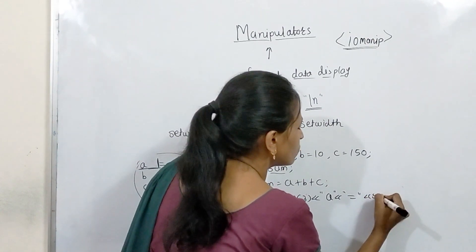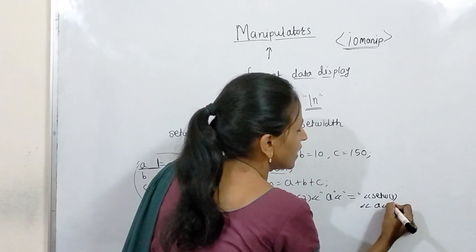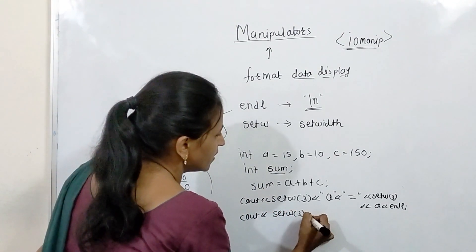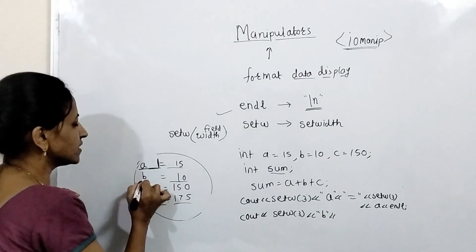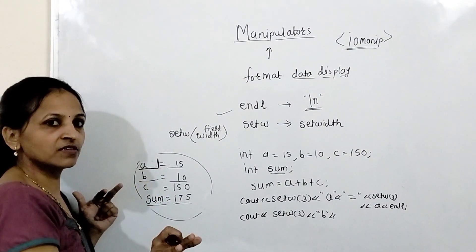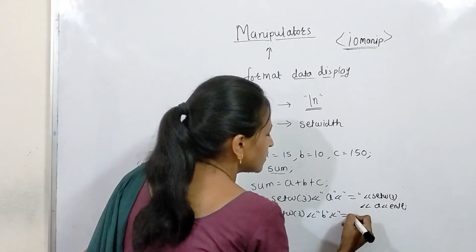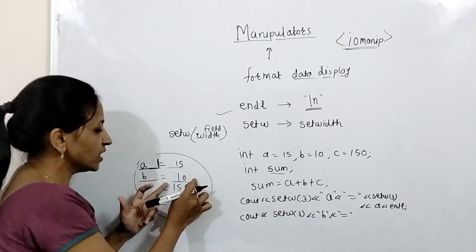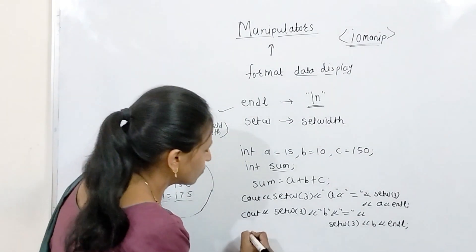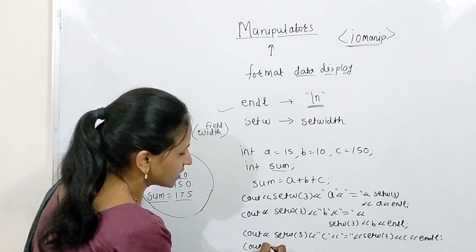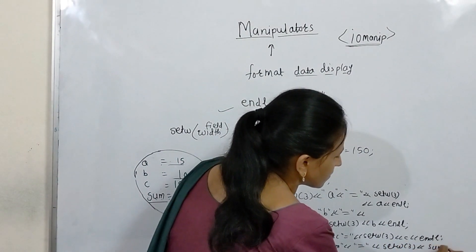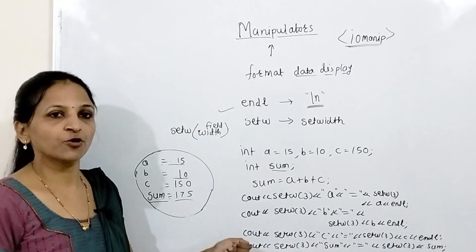After that, we display the next line: again set width to 3 for displaying b as a string — b will be displayed in those three places, but strings are left-justified, so b will appear on the left and two spaces remain blank. Then display the equal to sign, then again setw(3) for the value of b, then b, then endl. In the same way, for sum: setw(3) then "sum =", then setw(3) and the value of sum. That's how you use the setw manipulator to display formatted output.